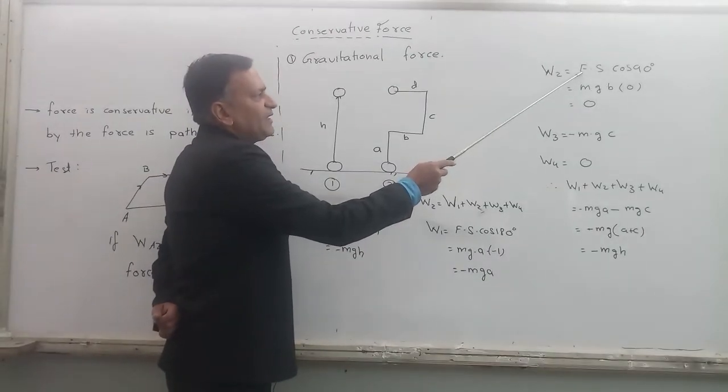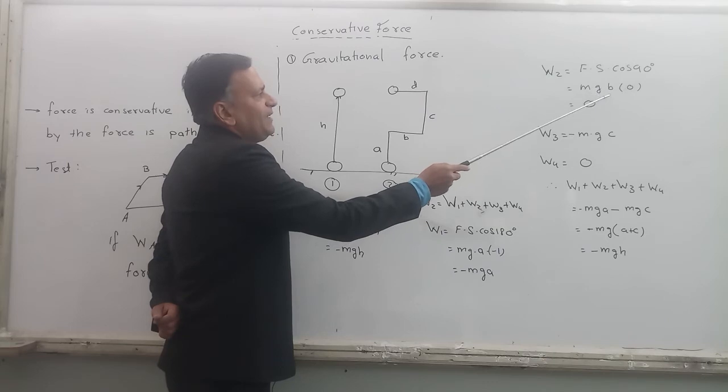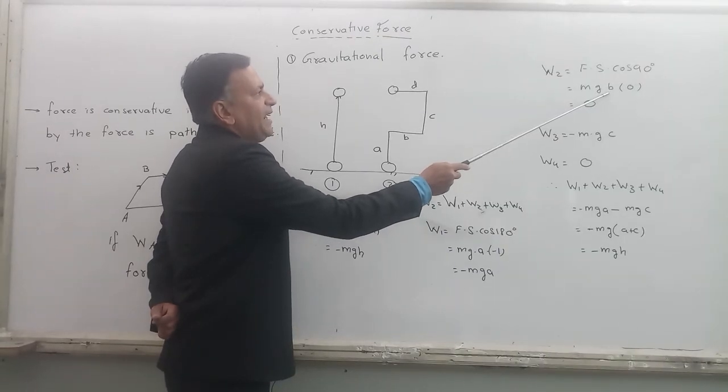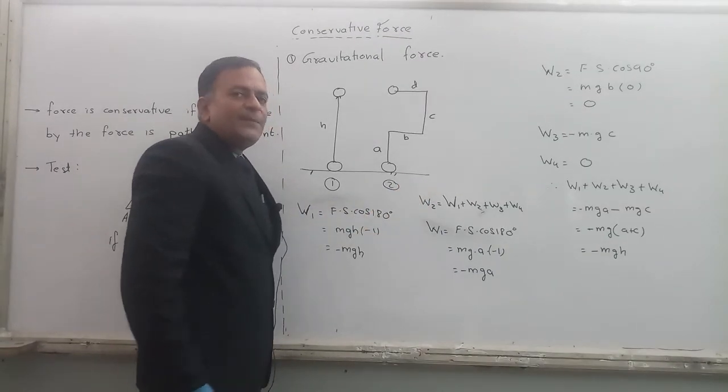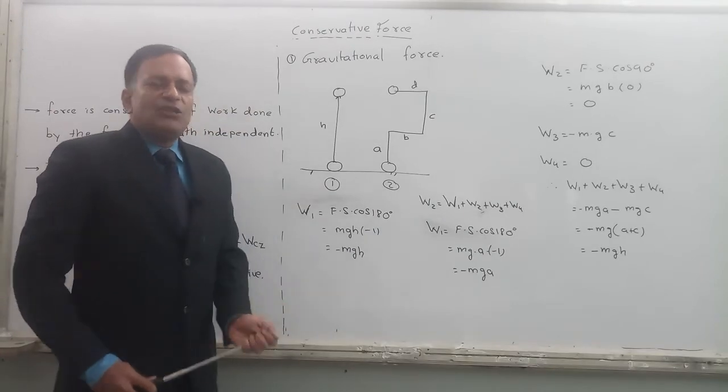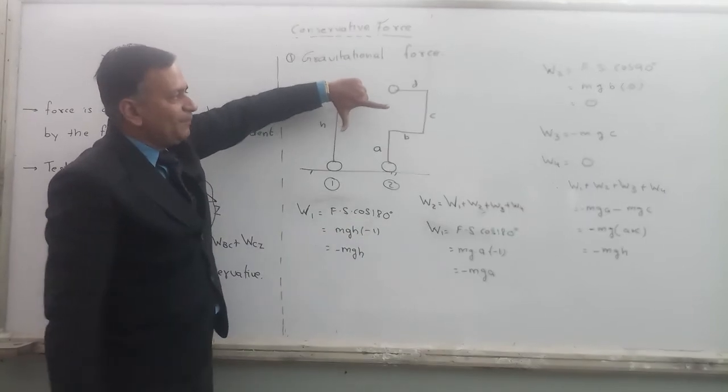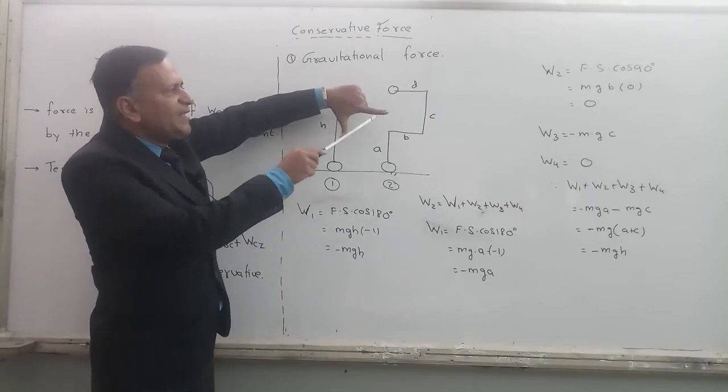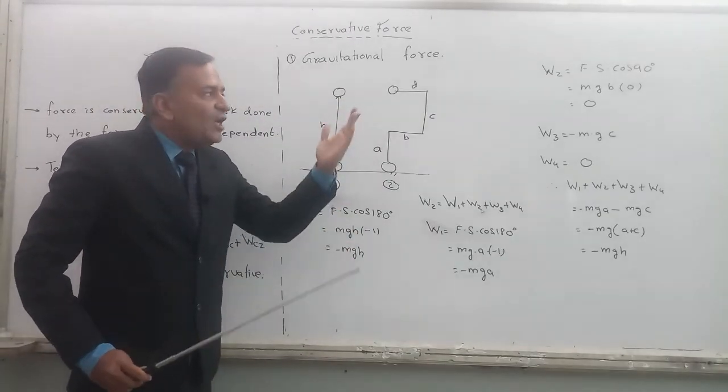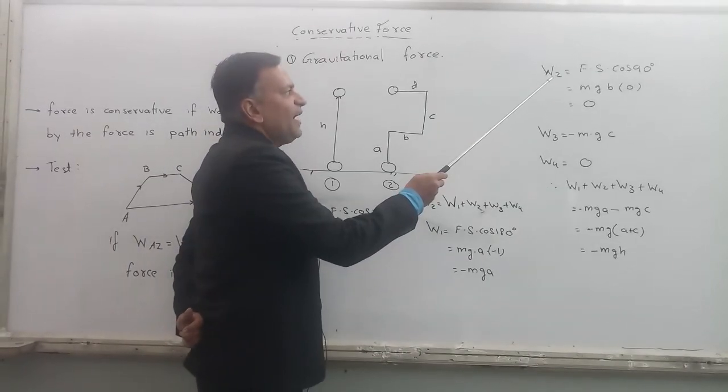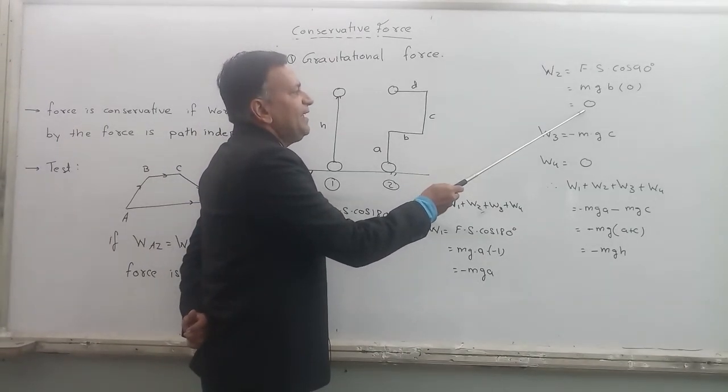Work done in the second path, that is from here to here covering a distance B. Force, gravitational force is MG. Displacement is equal to B. But here the angle between force and displacement is 90 degrees. Where is the direction of gravitational force? It is downwards. Where is direction of displacement? It is towards your right side. So what is the angle between force and displacement? It is 90. Cos 90 is 0. So work done in the second path is equal to 0.